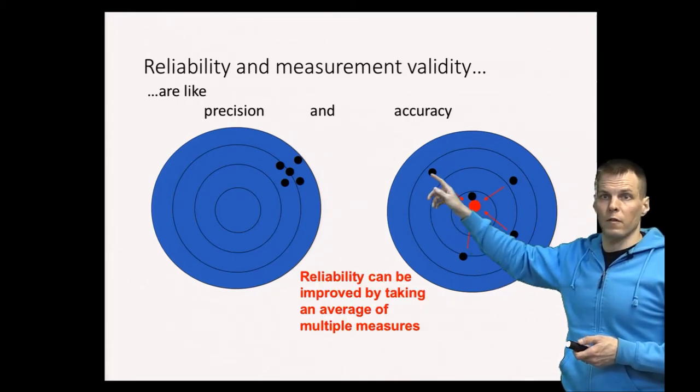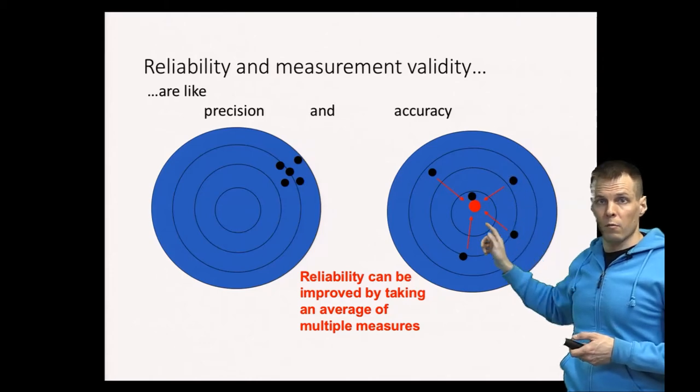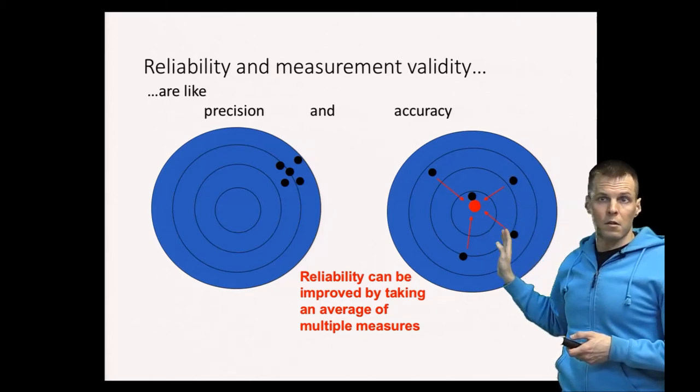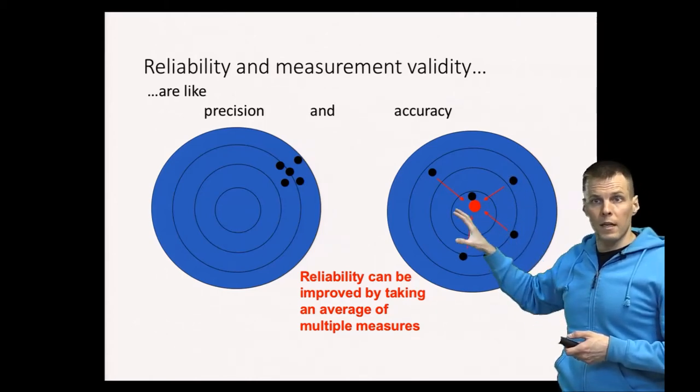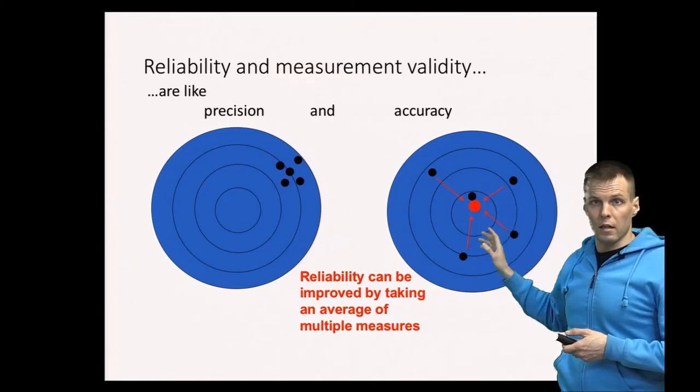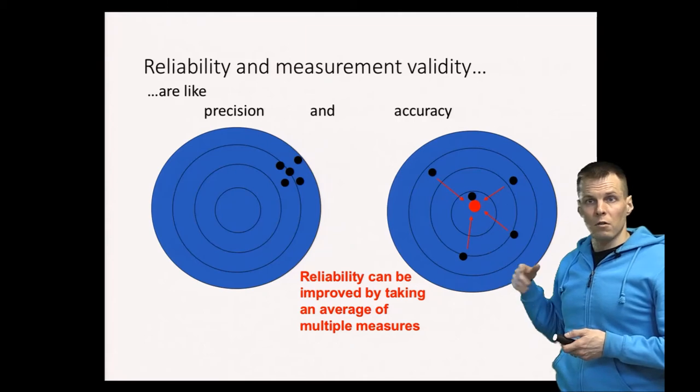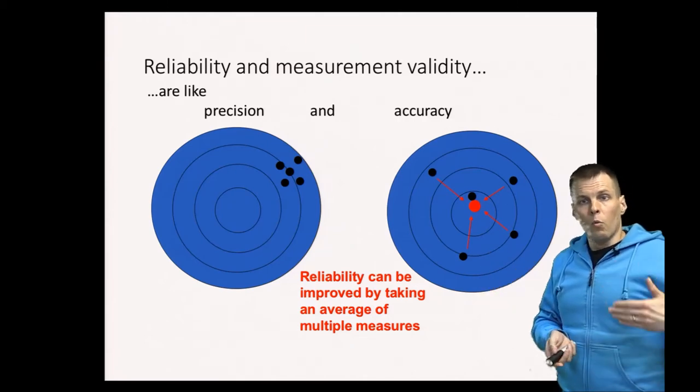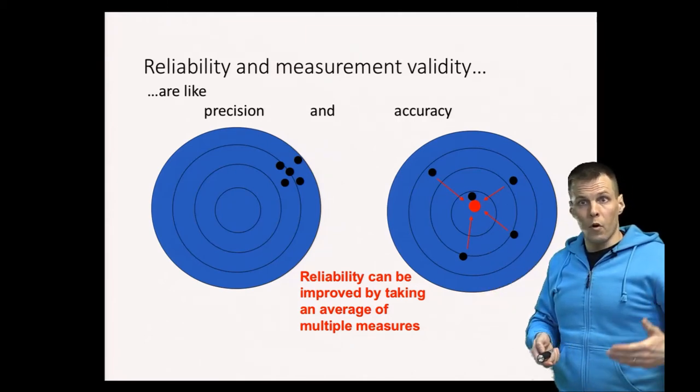It's right in the middle in this case. So the mean of these individual shots is a lot more precise than any individual shot. So that's the reason why we use composite measures.